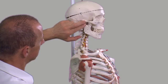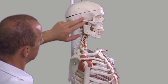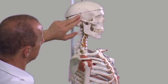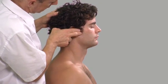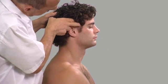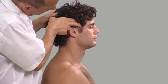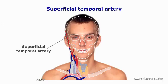The superficial temporal artery emerges as a branch of the external carotid. The temporal artery can easily be palpated just anterior to the tragus of the ear or just posterior to the neck of the mandible. If the fingers are traced superiorly and slightly anteriorly, the superficial temporal artery can also be palpated over the temporalis muscle.